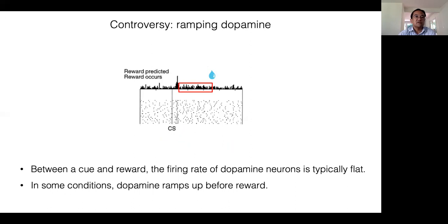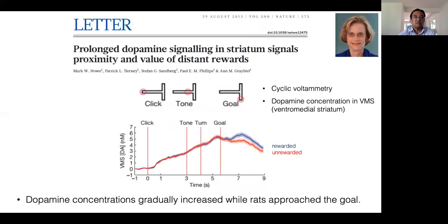However, there are still many controversies in the field. One such issue is called ramping dopamine. In many experimental conditions between the cue and reward, the firing rate of dopamine neurons is typically flat, staying at the baseline level. However, recent studies have shown that this is not always the case. In this experiment, they measured the concentration of dopamine in the ventromedial striatum using cyclic voltammetry while rats performed in a T-maze task. They observed that dopamine concentrations gradually increased while rats approached the goal. This study proposed that this prolonged dopamine activity might signal proximity and the value of distant rewards and drive motivation to perform.